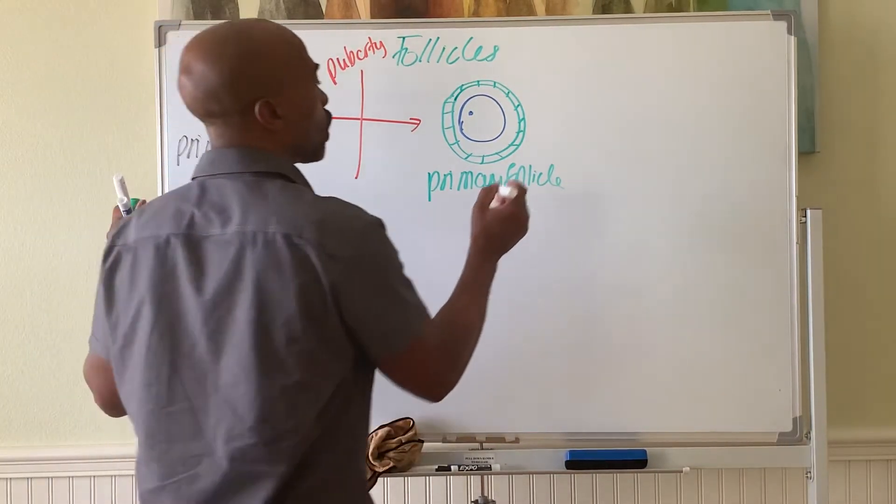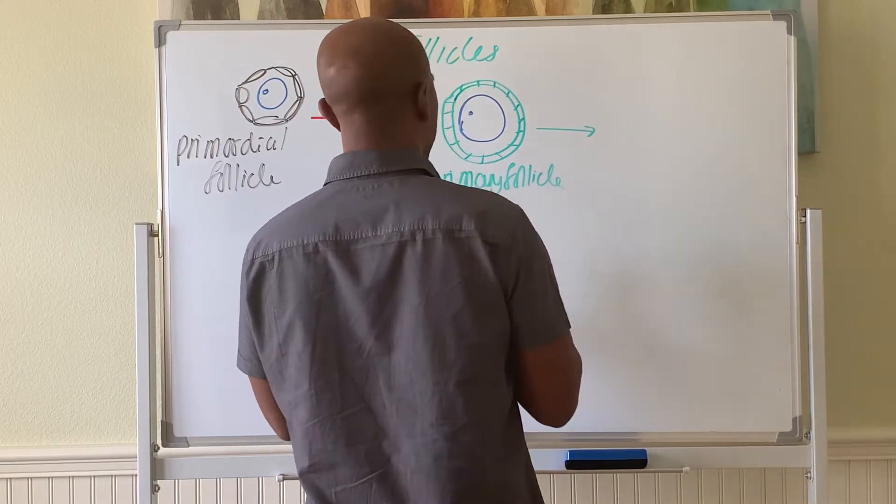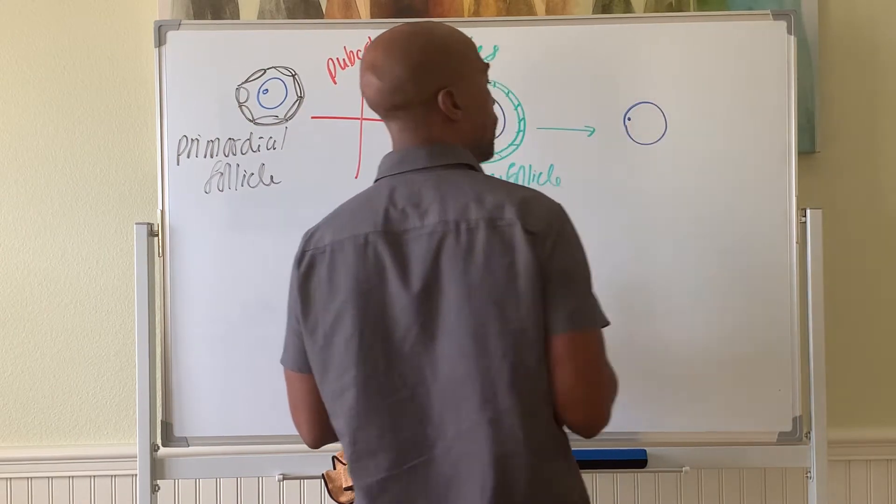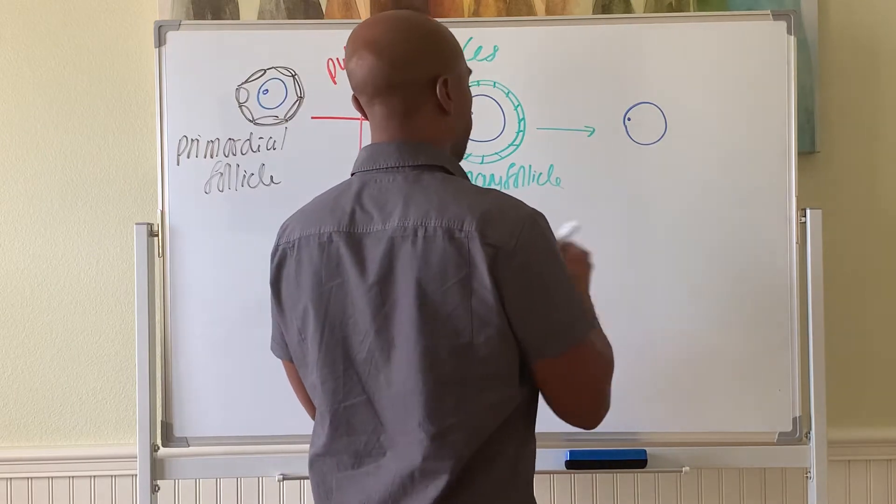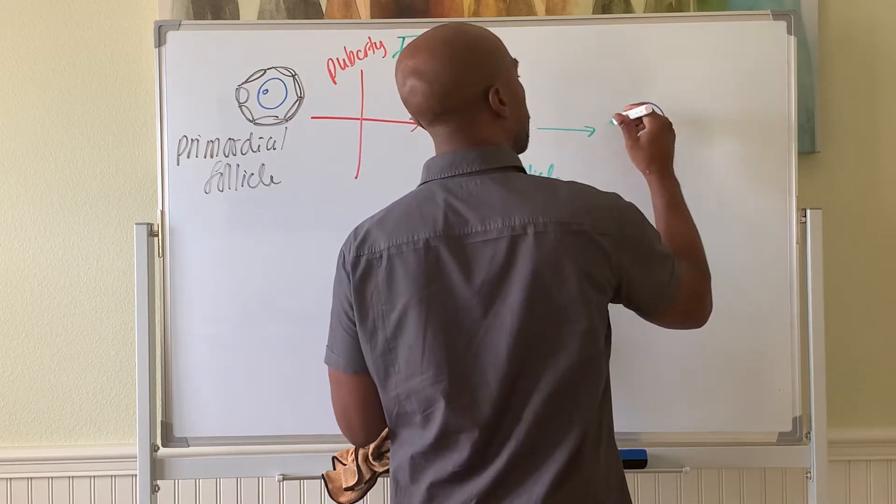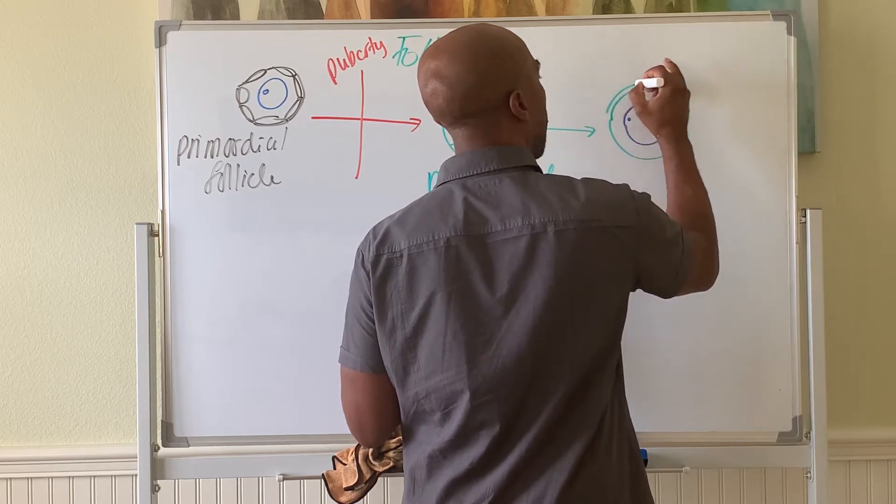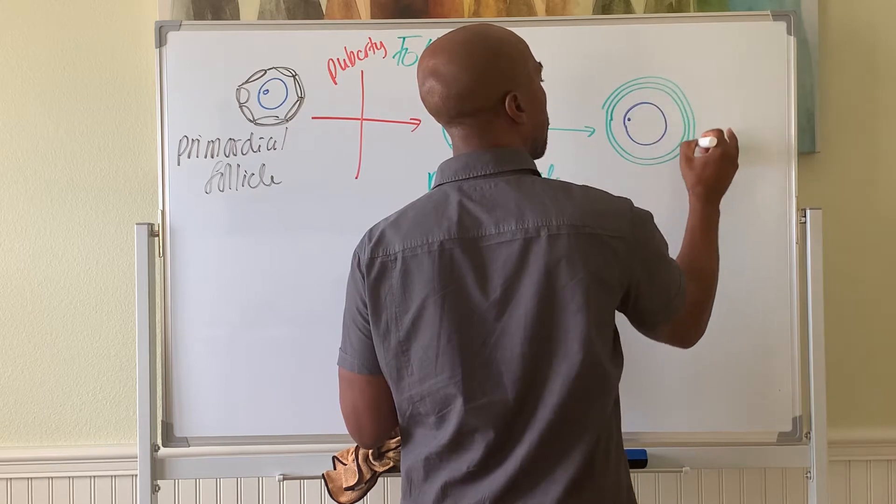Then the primary follicle will mature some more to the point now—so again you still have the oocyte sitting there, arrested in prophase one. And now the follicle is still doing its thing out here. So now we have more layers of cells, more layers of cells out here.